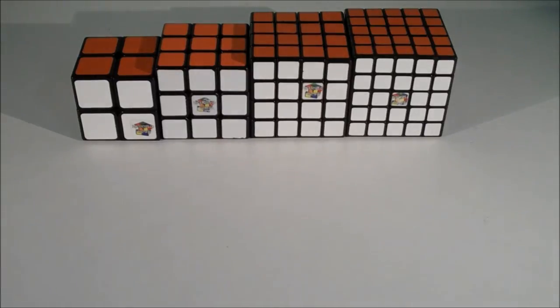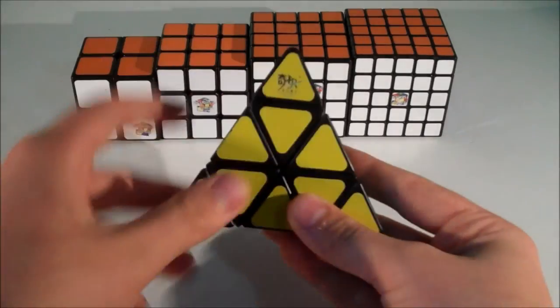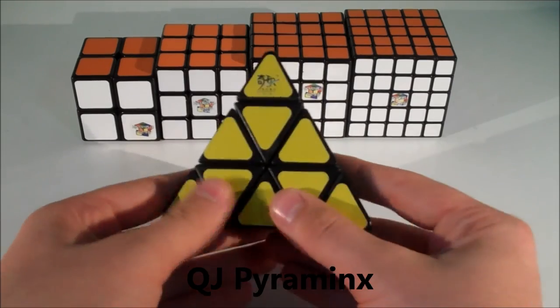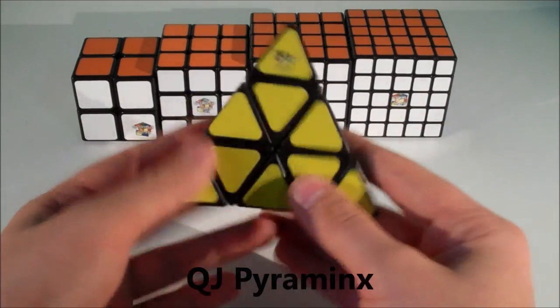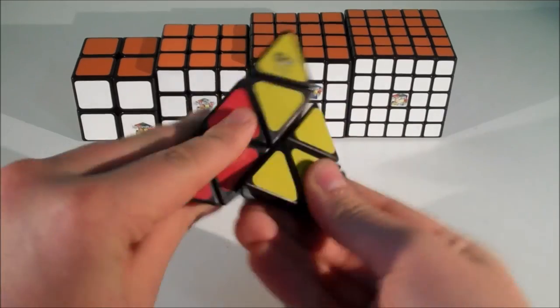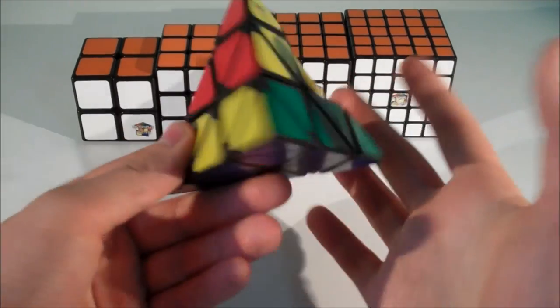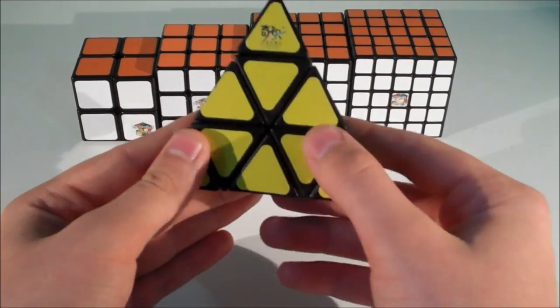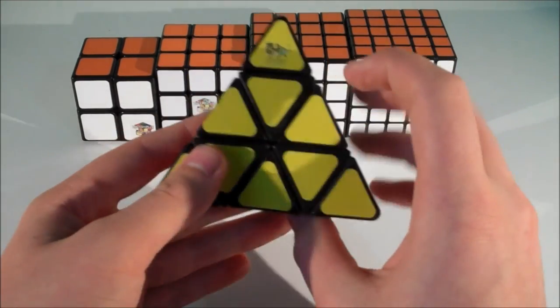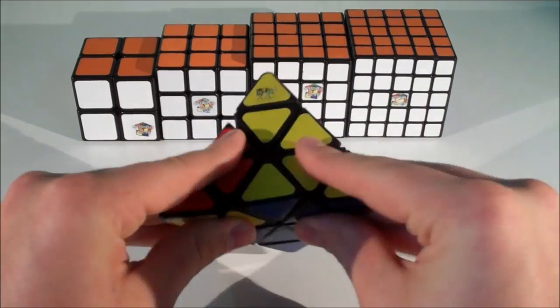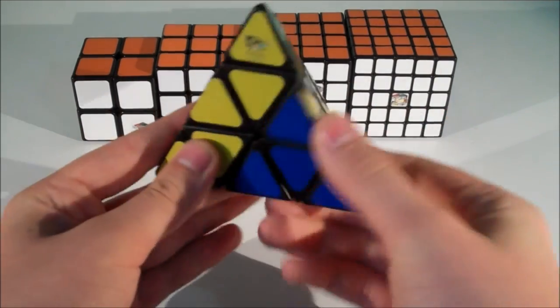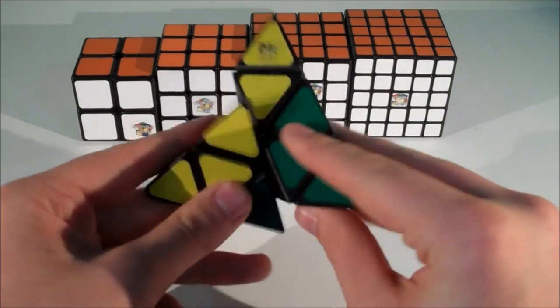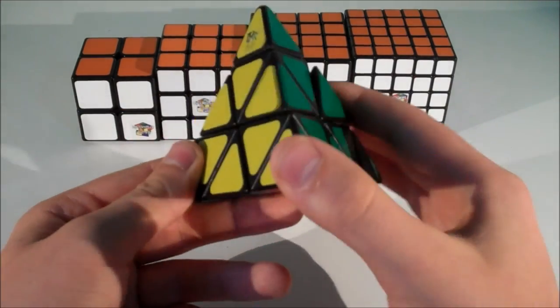So onto the non-cubic puzzles. For Pyraminx, I use the QJ Pyraminx. This Pyraminx is really good - it turns really well and all the sides turn equal. The only thing I don't really like about this puzzle is I think that the clicking is a bit much. But it does help with keeping the puzzle aligned. The only problem I find is that when I am speed solving, the clicking can kind of put me off and it can make me do inaccurate turns because I am worried about it not snapping.